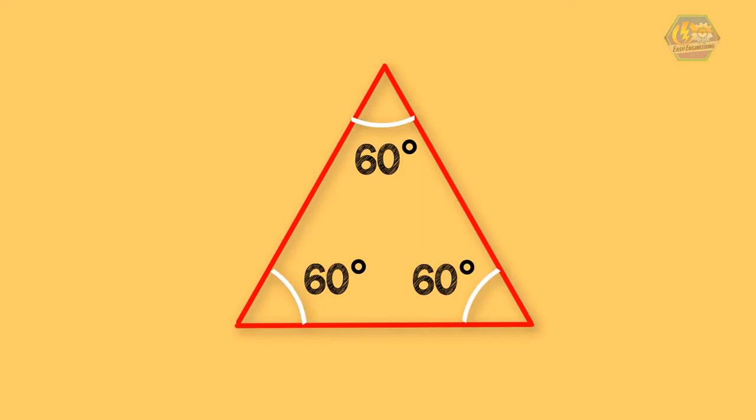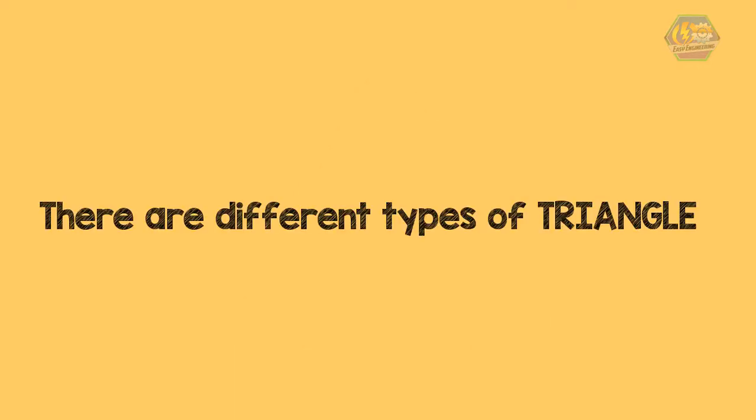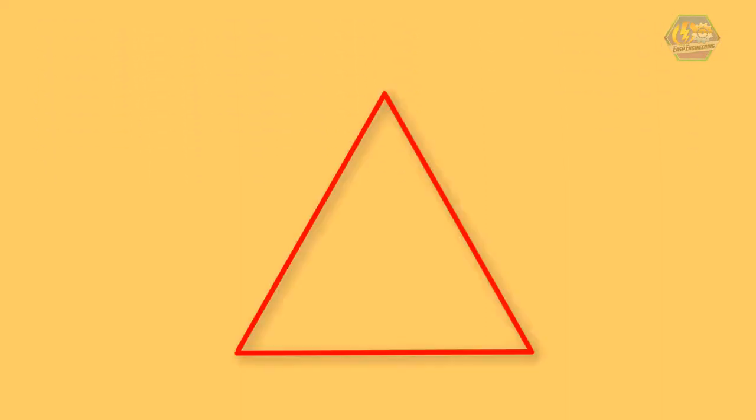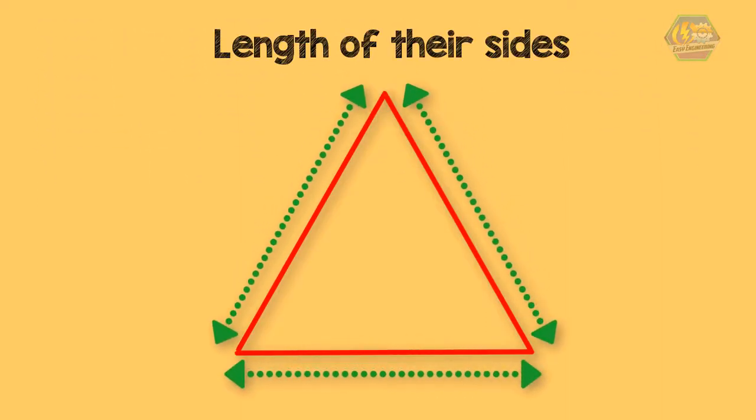But did you know that there are different types of triangles? One way in which triangles can be classified is based on the length of their sides.